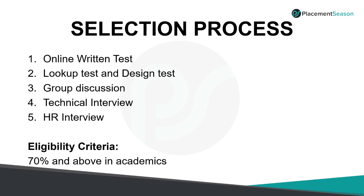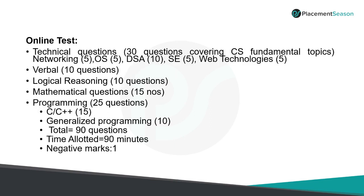Now let's look at the interview process for Burning Glass. Their selection process has five steps: the online aptitude test, the lookup test, the design test, followed by the group discussion, the technical interview, and then the HR interview. The eligibility criteria to attend the Burning Glass recruitment process is that a student should have about 70% throughout their academics.